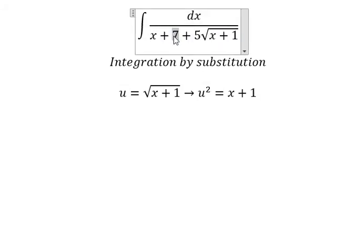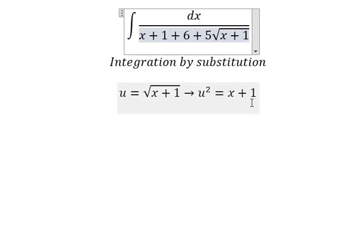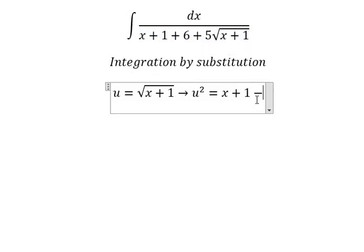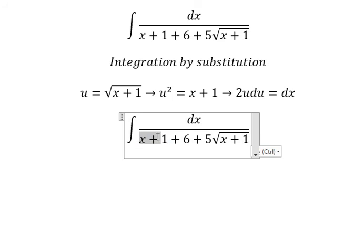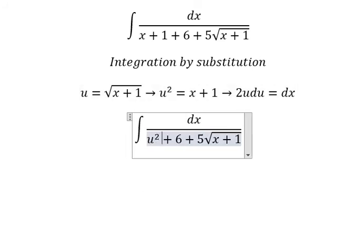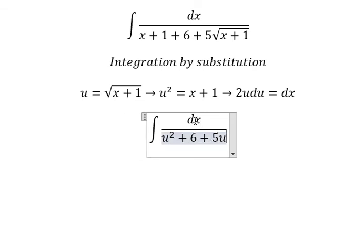Number 7 in here just like 1 plus 6. Later we do first derivative for both sides. x plus 1 we change for u squared. The square root of x we change for u. dx we change for 2u du.